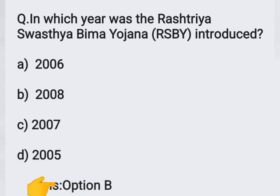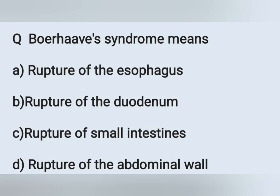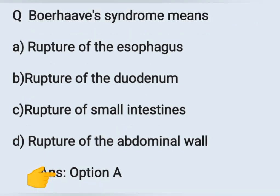The next question: Boerhaave syndrome means — Option A: rupture of the esophagus, Option B: rupture of the duodenum, Option C: rupture of the small intestine, Option D: rupture of the abdominal wall. Boerhaave syndrome refers to rupture of the esophagus. Option A is the correct answer.